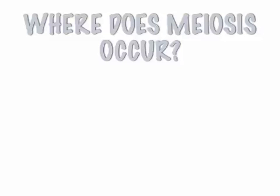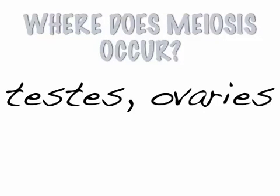Where does meiosis occur? Since we're making sex cells like sperm and egg, it has to happen in reproductive organs. In males, it happens in the testes — that's where sperm is made. In females, it happens in the ovaries. Males don't start making sperm until puberty, but females actually make their eggs way before they're born.